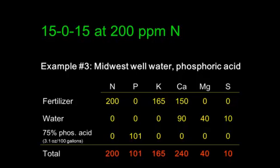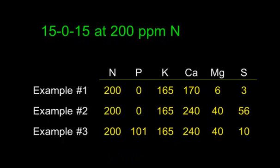A third example uses the same Midwest water but with phosphoric acid instead of sulfuric acid. Looking at the totals: still 200 ppm nitrogen, but now phosphorus levels are 101 ppm. Potassium levels are the same, calcium and magnesium levels are the same as with sulfuric acid, and sulfur is lower. Comparing all three solutions — they all use 15-0-15, but each one is different because of the water source and the acid used.